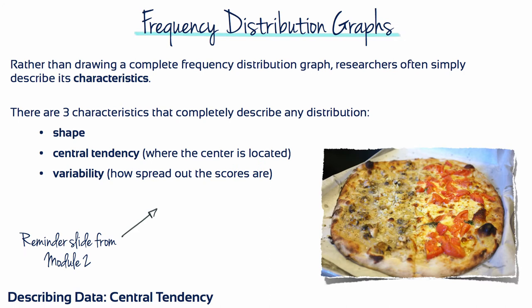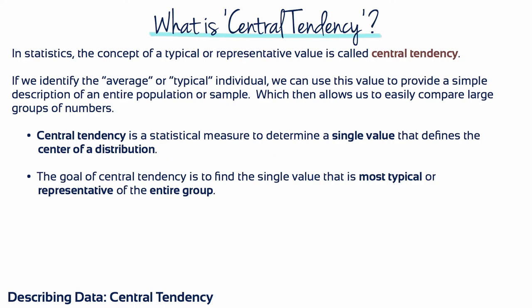Central tendency is the second of the three characteristics used to completely describe any distribution. Central tendency refers to the descriptive statistic that best describes the center of a dataset, the particular value that all the other data seem to be gathering around. In everyday language, the goal of central tendency is to identify the average or typical individual.